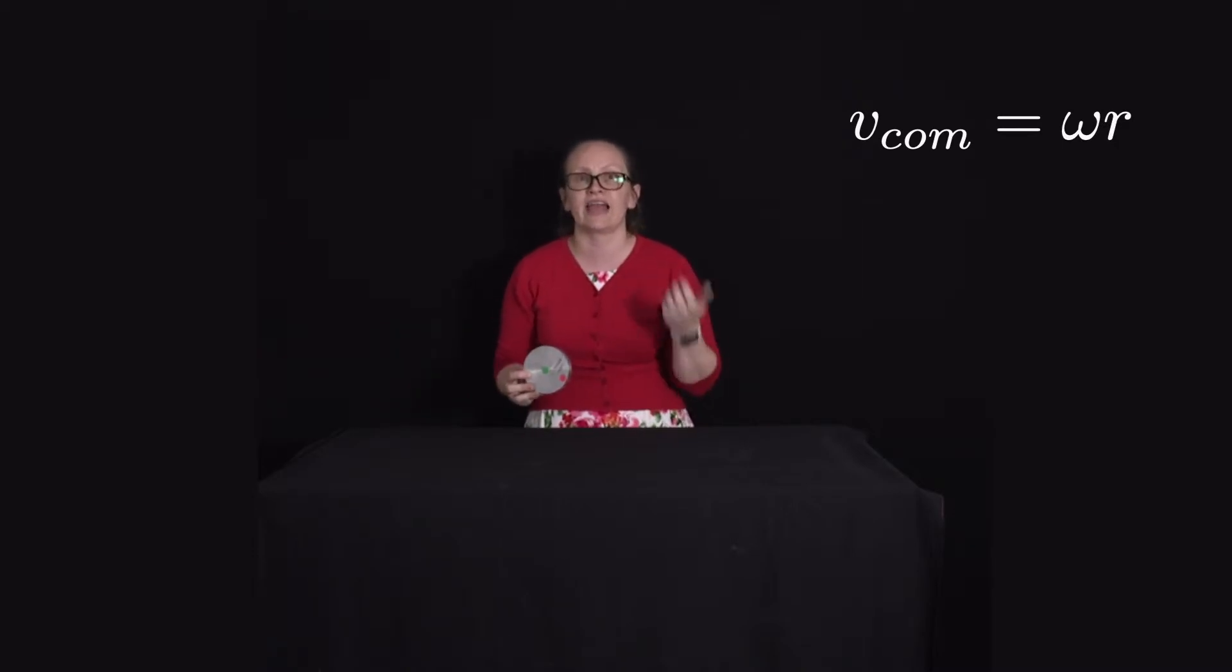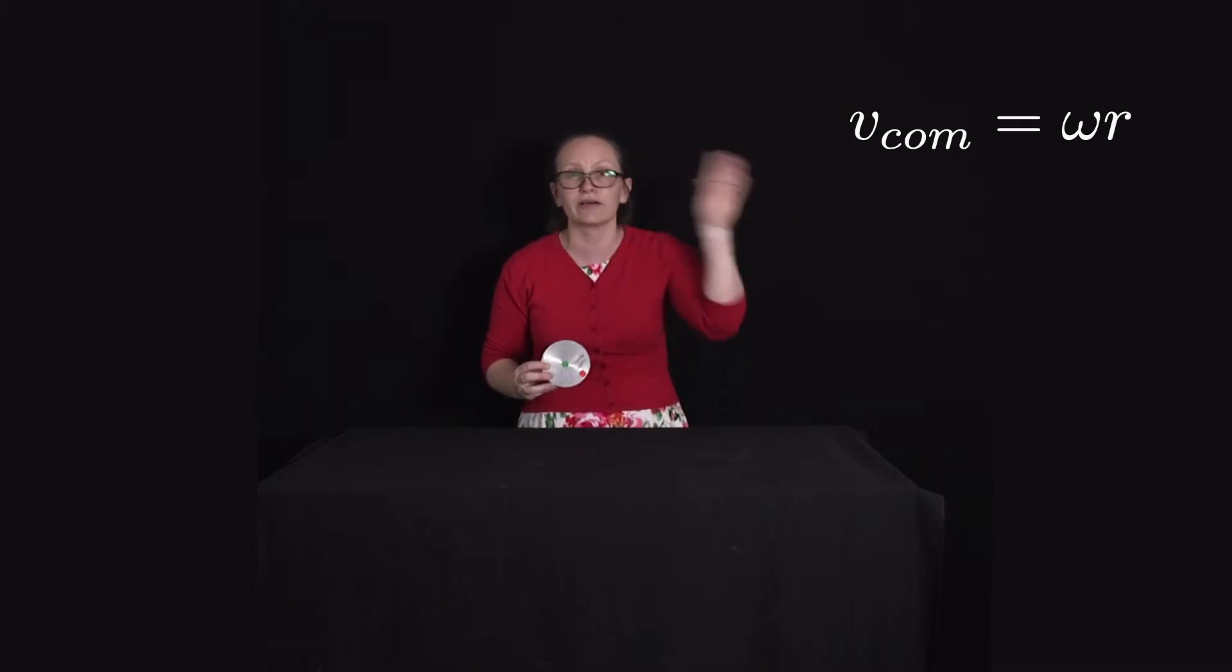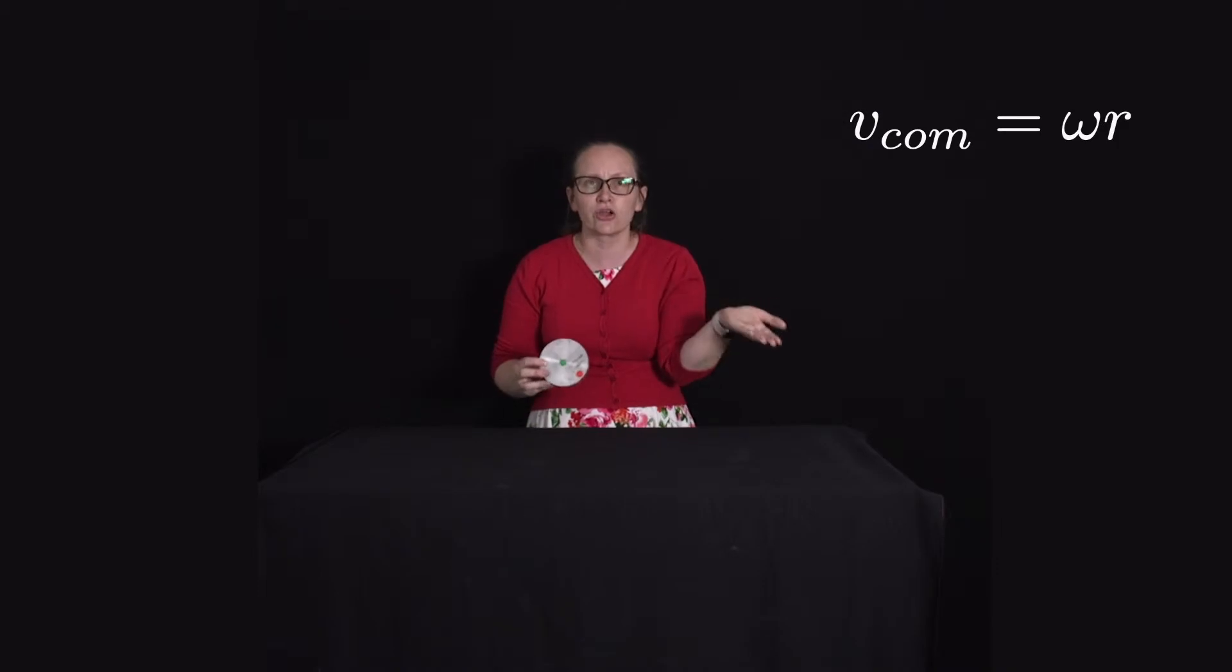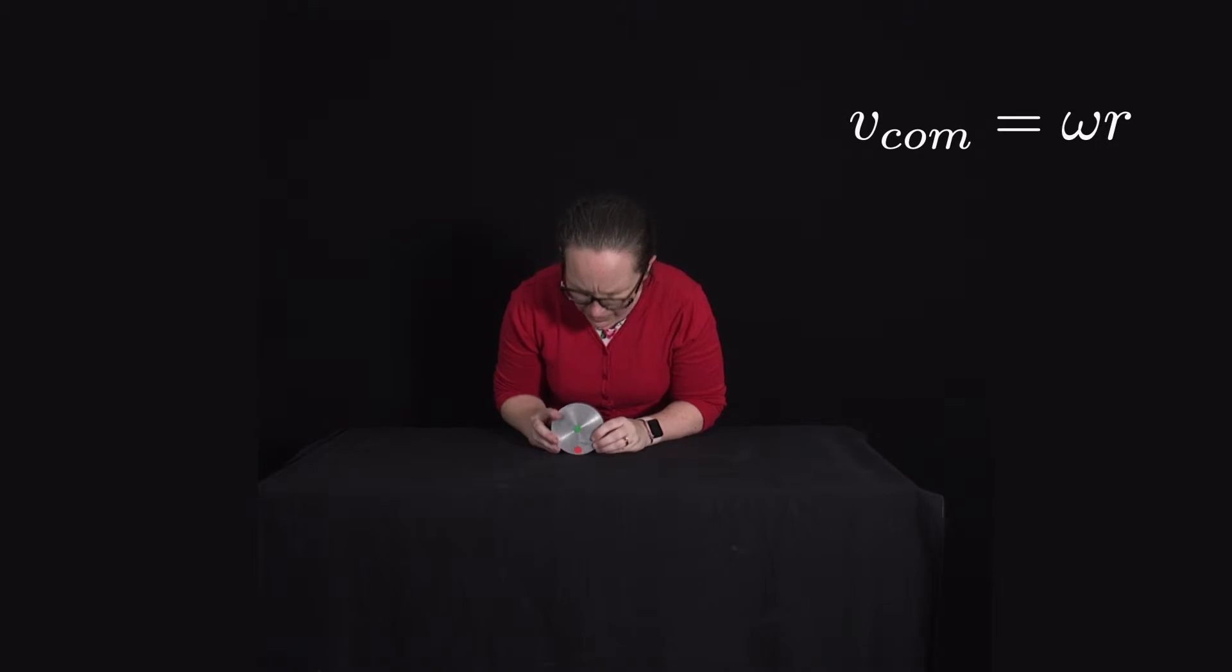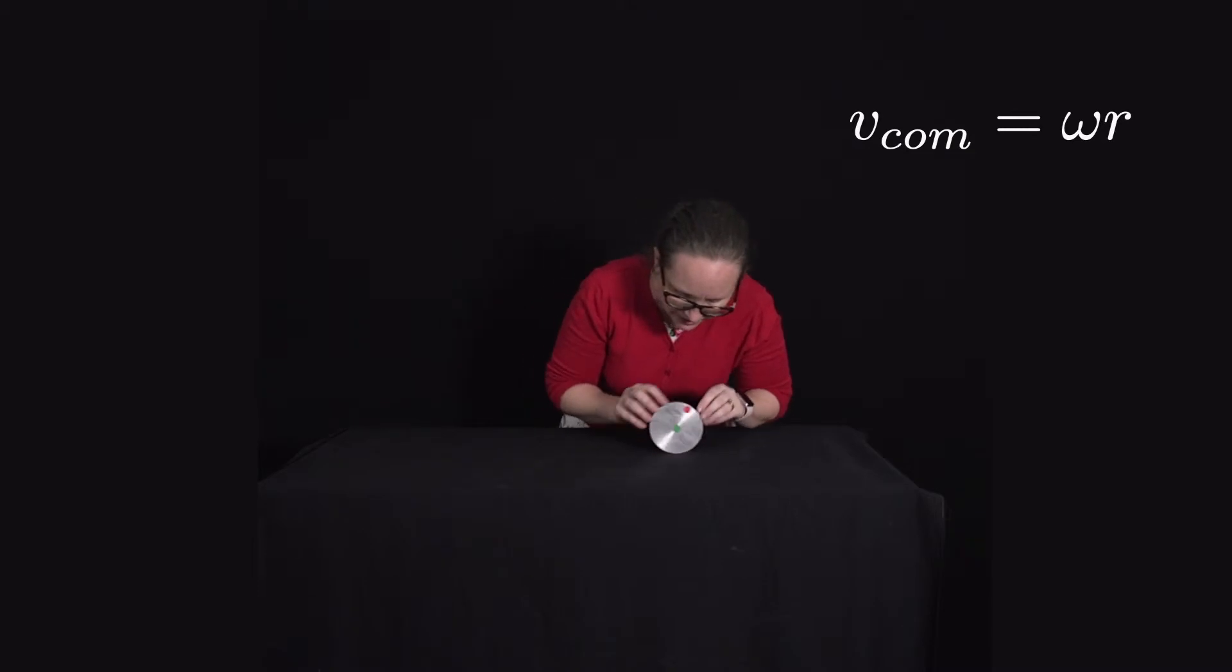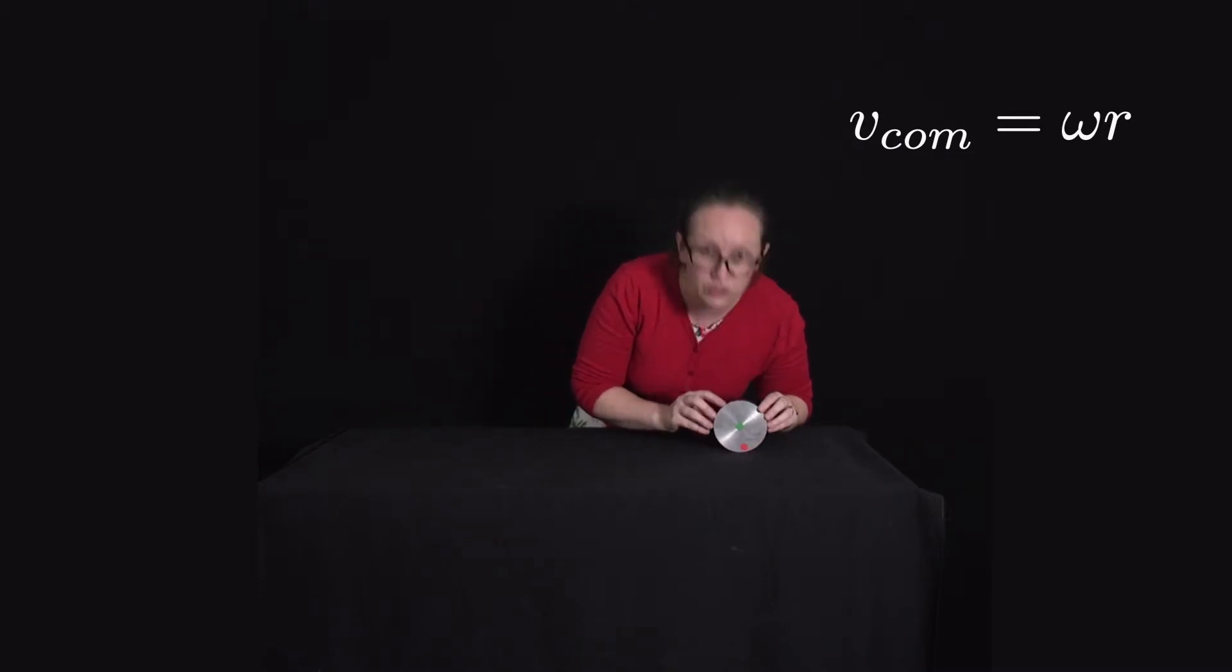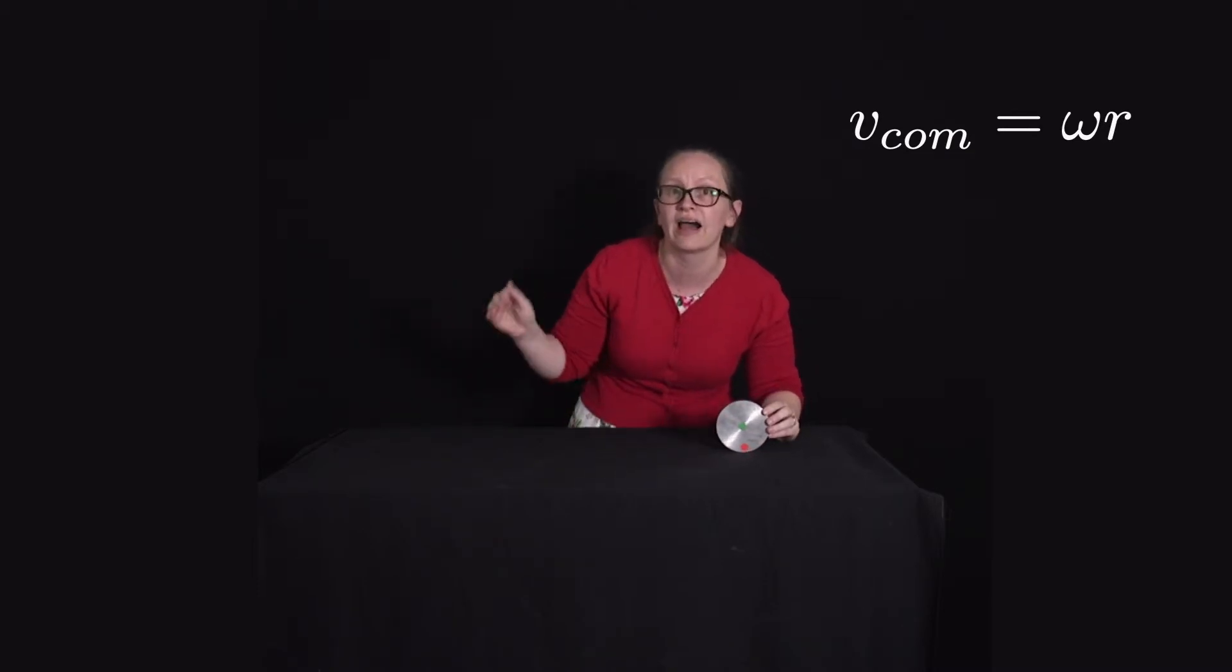Where omega is the angular speed of the object. We saw this equation before when we were looking at circular motion, and that's no coincidence. If we think about how far this disc travels in one period, the distance it travels is one circumference, which is given by 2πr.